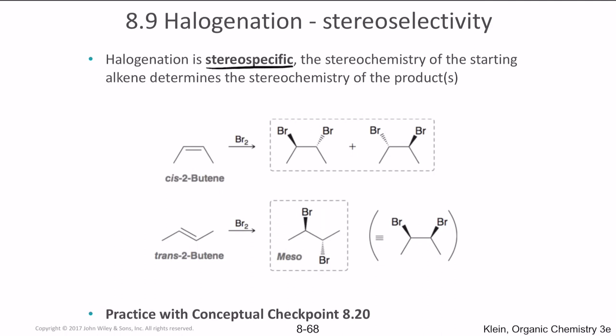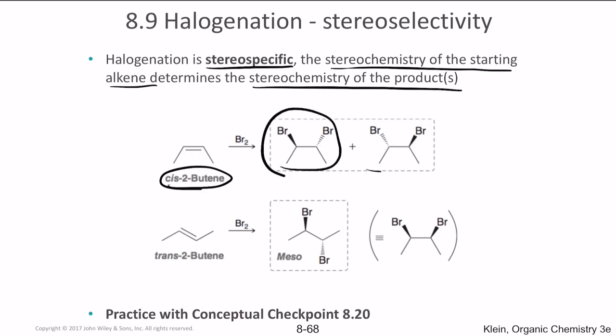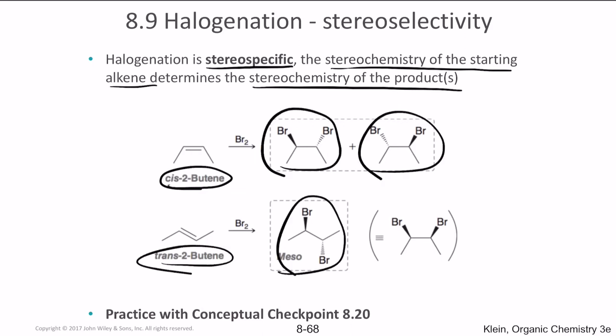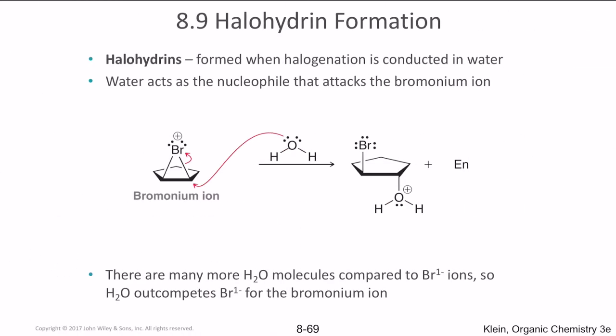Halogenation is also stereospecific — the stereochemistry of the starting alkene determines the stereochemistry of the product. If the starting alkene is cis, you end up with two different stereoisomers. If it is trans, you end up with a meso compound. Remember: trans structures result in meso compounds and cis structures result in two different stereoisomers. That is halogenation.